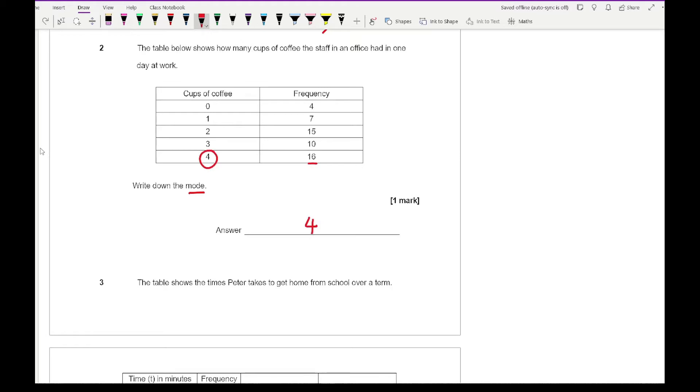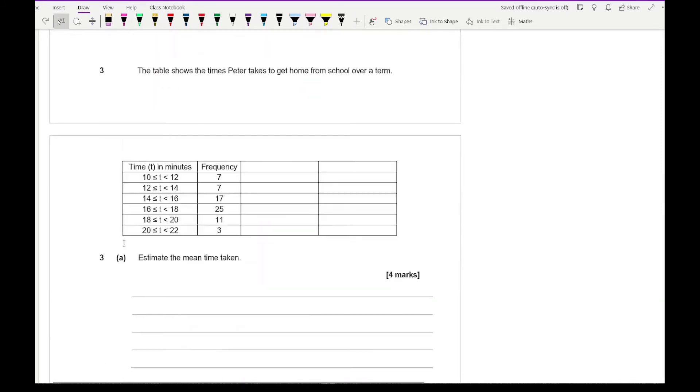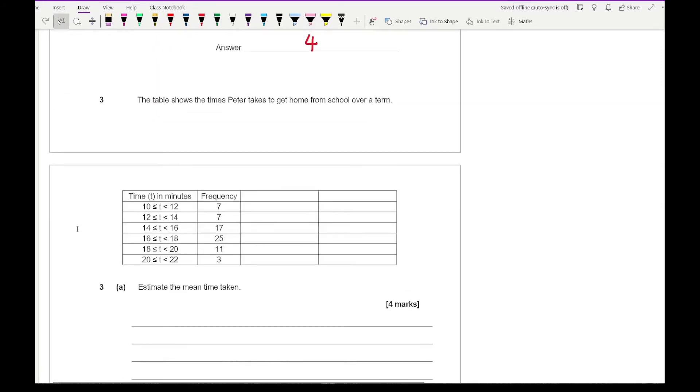Question three, which is on two pages, says the table shows the times Peter takes to get home from school over a term. The question says to estimate the mean time taken. Now this is grouped data, so from this what I need to do is create a midpoint column. Call it M, call it mid, could even write midpoint—you're not going to get any marks for it either way.